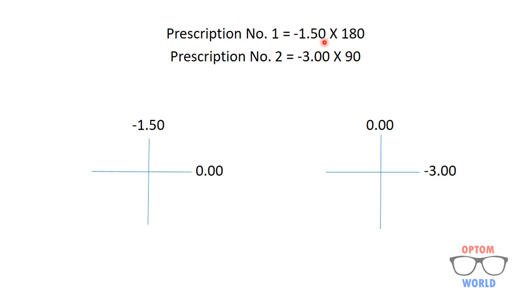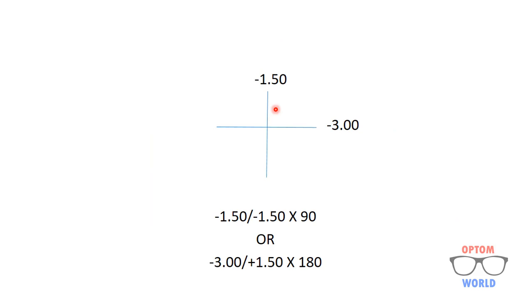In this example we have cylinders of the same sign but with opposite axes, so again we draw an optical cross. Prescription number one is minus one point five zero at 180 axis — the axis has no power, so the 180 meridian has zero power and the 90 meridian has minus one point five zero. For prescription number two, the 90 meridian has zero power and minus three is the power on the 180 axis. We add these two crosses and get minus one point five zero at 90 degrees and minus three at 180 degrees.